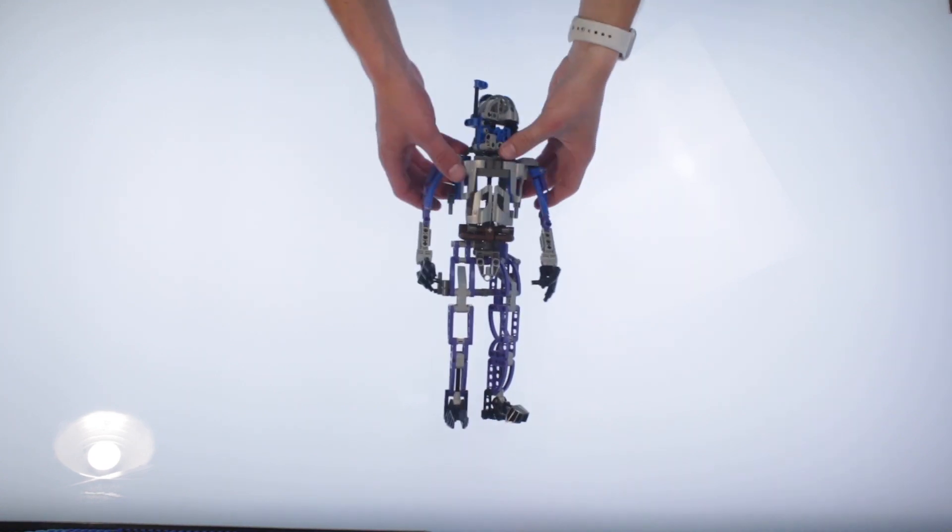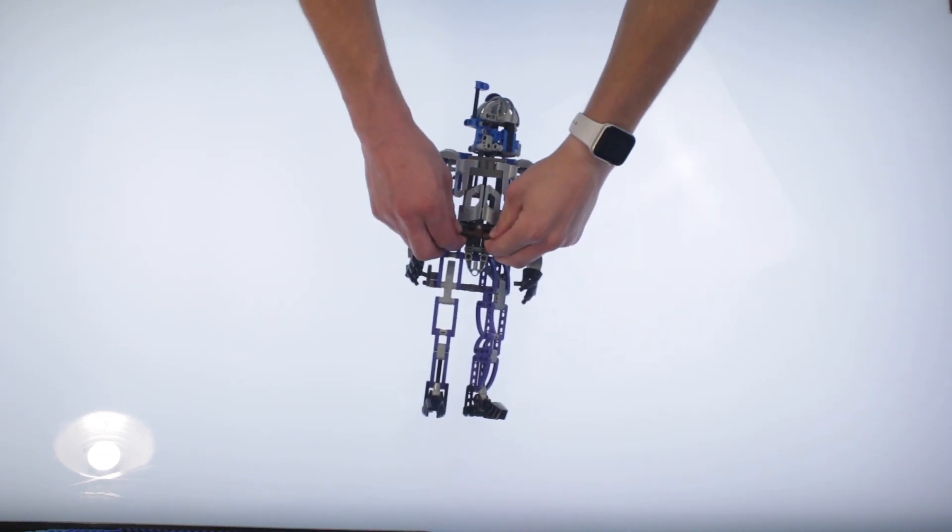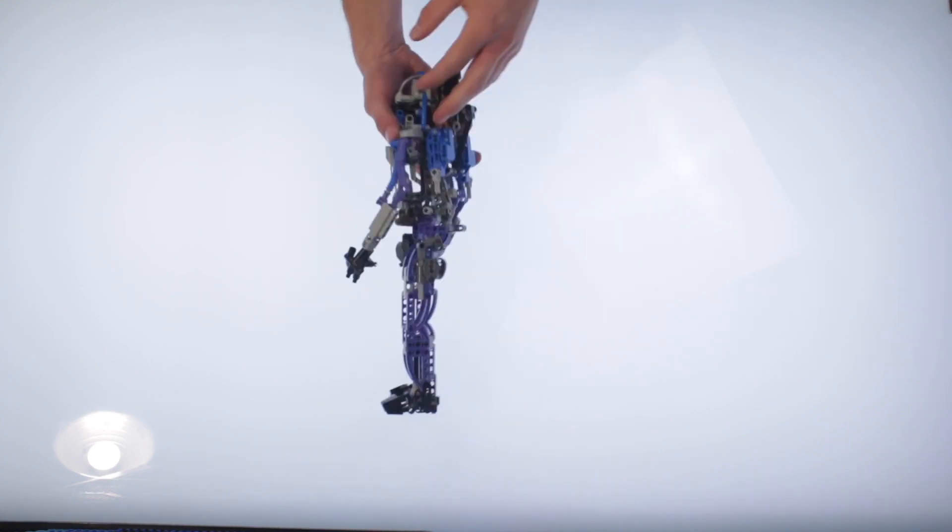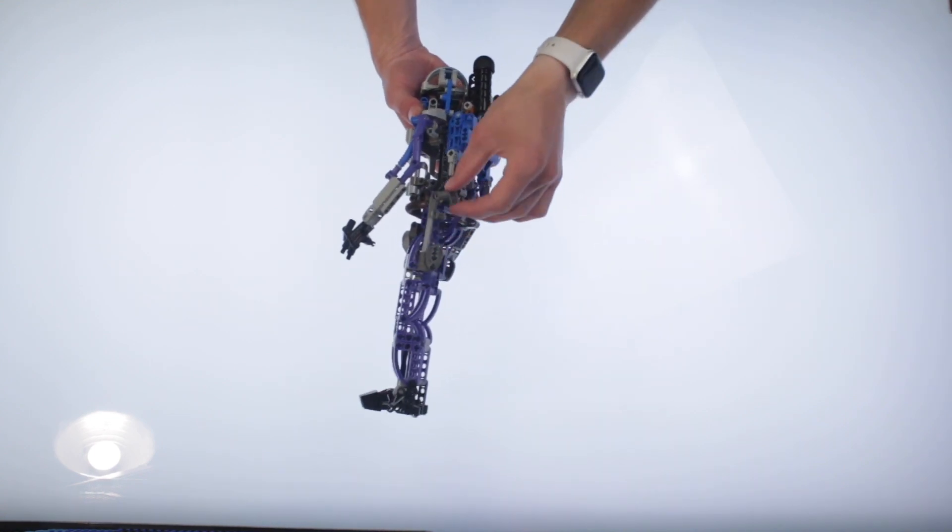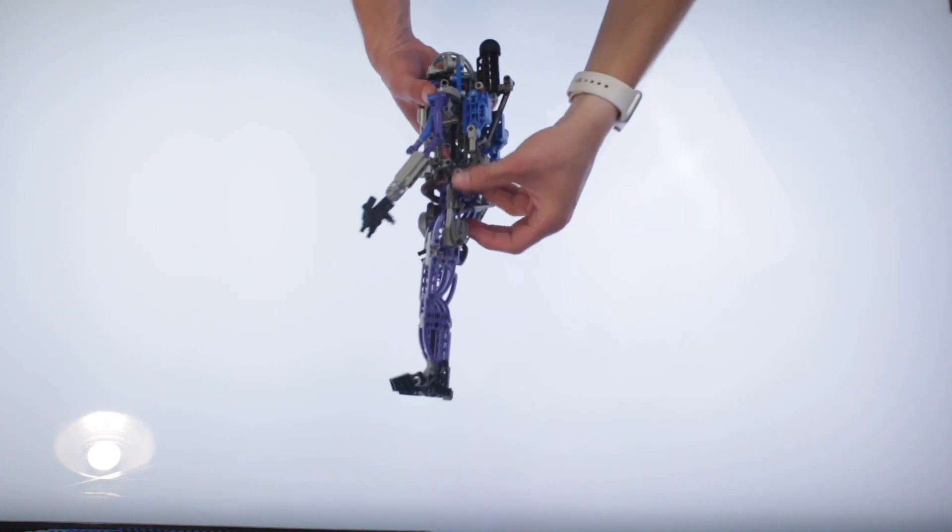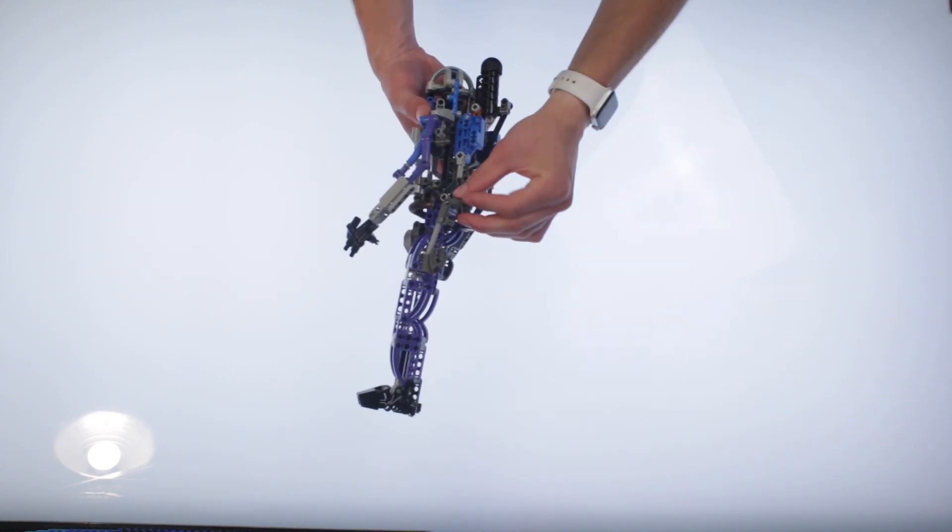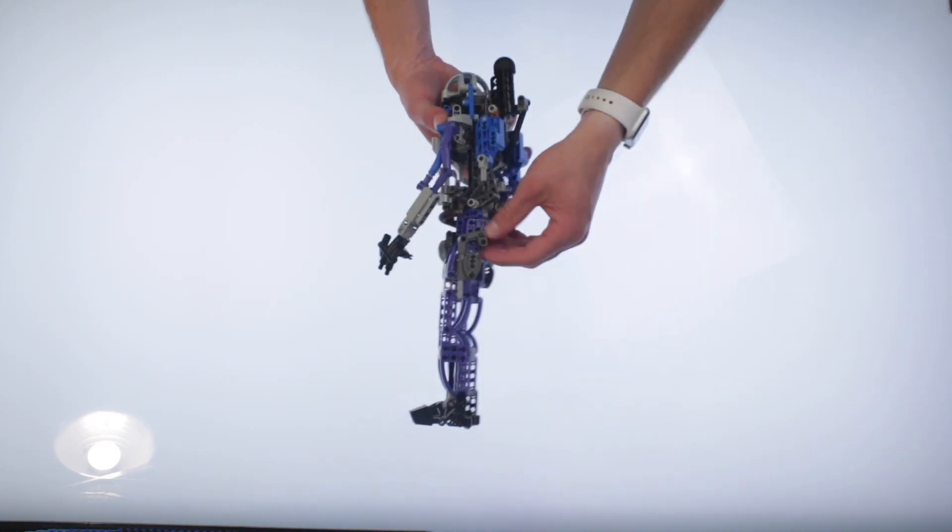All right, and Jango Fett is done. I didn't realize that when I first built this, he didn't actually have his blaster, and I had to go find the pieces for it. It wasn't that hard. I definitely had the pieces for it.